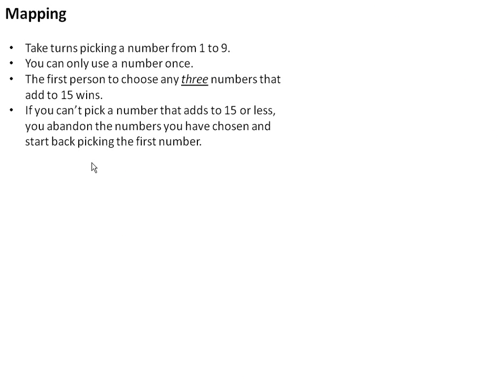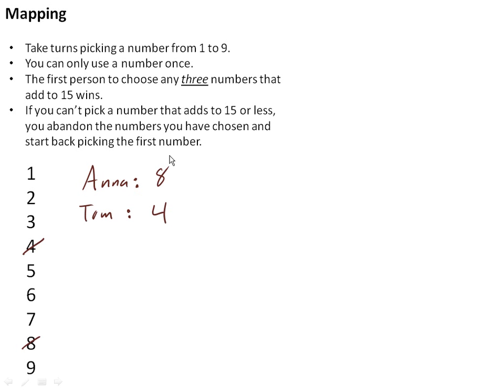We're going to show an example of mapping that's a game. The game is given by these simple rules: you and a friend are going to take turns picking a number from one to nine, you can only use a number once, and the first person who has any three numbers that add to fifteen wins. You can't have two, that doesn't count; three numbers have to add to fifteen. If you can't pick a number that adds to fifteen or less, you abandon the numbers and start over. Let's do an example: player Anna and player Tom flip a coin, Tom gets to go first, and Tom chooses the number four.